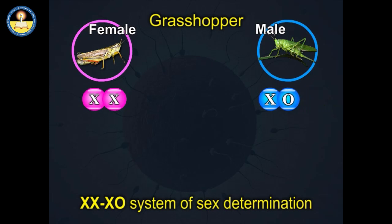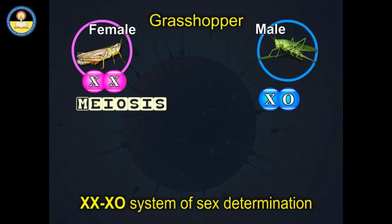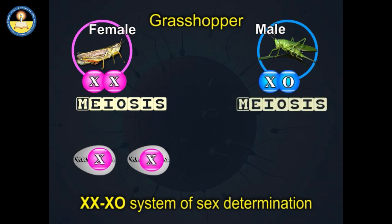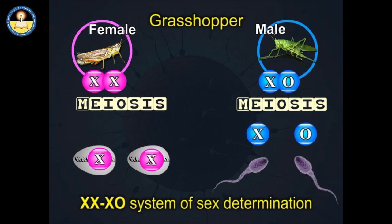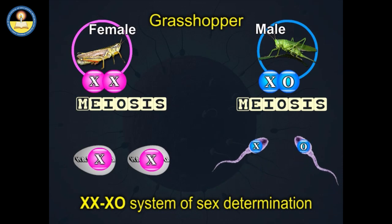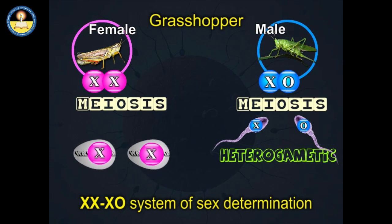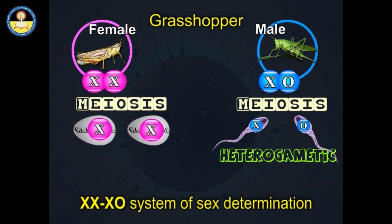The letter O signifies the absence of a sex chromosome. During meiosis in females, the two X chromosomes pair and then separate, with one X chromosome entering each haploid egg. In males, the single X chromosome segregates in meiosis to half the sperm cells. The other half receives no sex chromosome. Because males produce two different types of gametes with respect to sex chromosomes, they are said to be the heterogametic sex.